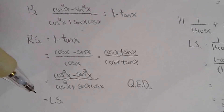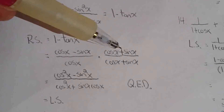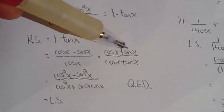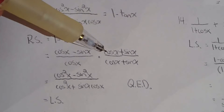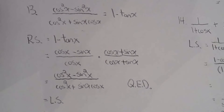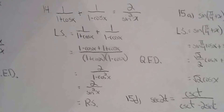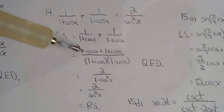A question I get often: am I allowed to multiply numerator and denominator by cosine x plus sine x? Absolutely — because cosine x plus sine x over cosine x plus sine x is essentially one, so you're just multiplying by one.